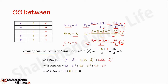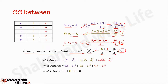Now we calculate the mean of sample means, or the total mean value, which is x double bar. X double bar is the summation of all three means: x1 bar is 6, x2 bar is 5, and x3 bar is 4. Dividing by 3, we get 15 divided by 3, which equals 5. So x double bar equals 5.